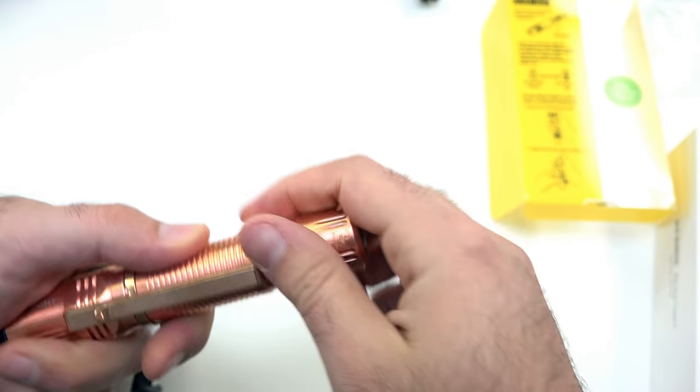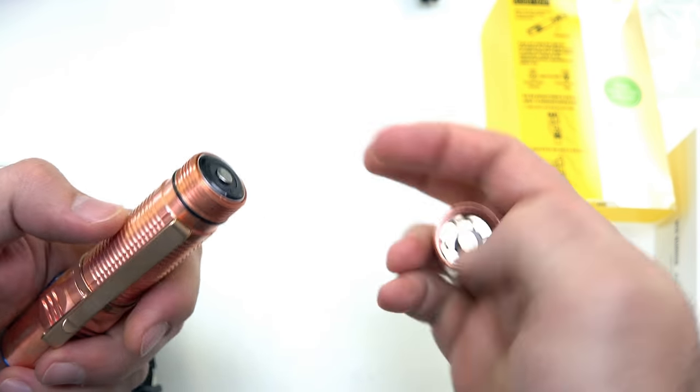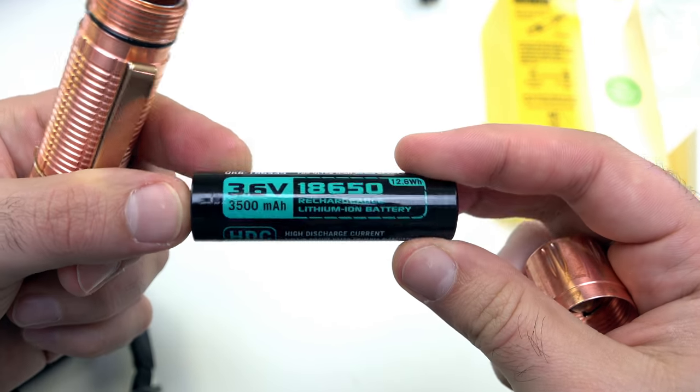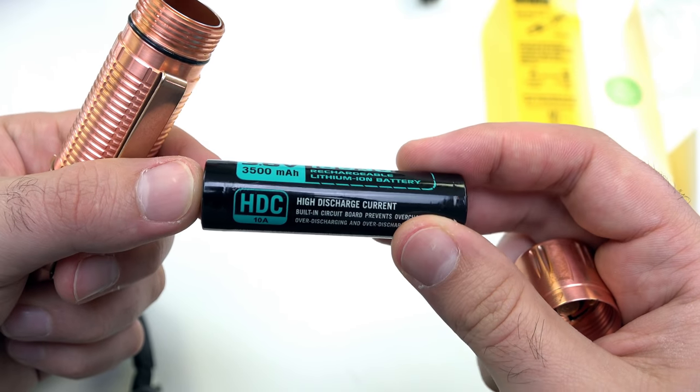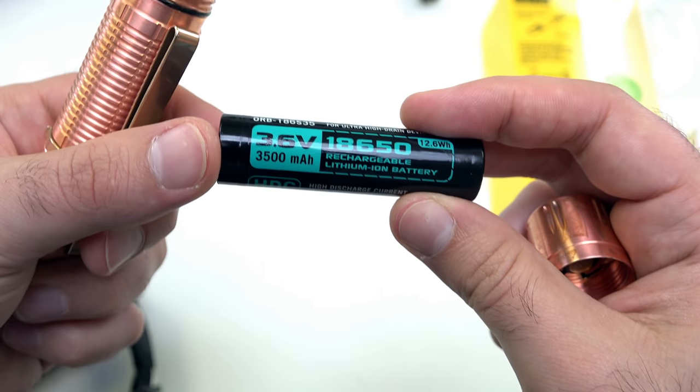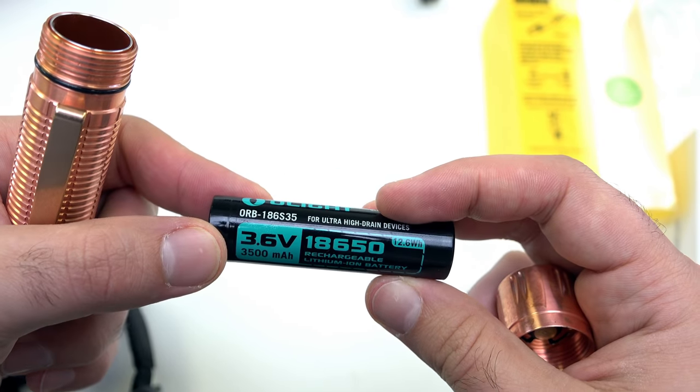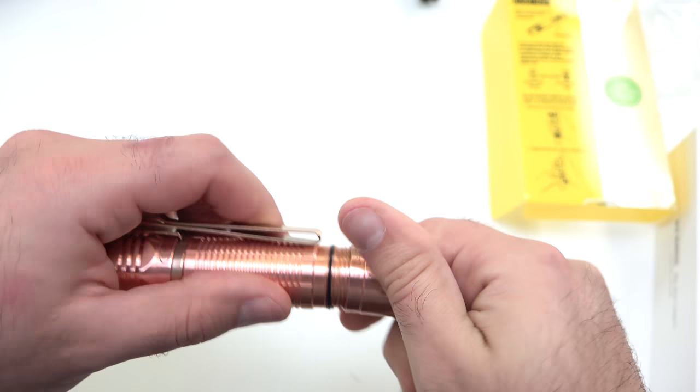First thing that we want to do is pull this out here so that the light will work properly. It comes with the 3500 milliamp HDC high discharge battery here, which is great. This is actually my favorite battery that we make. Let's pop this battery back in, you want the positive side facing the tail cap, and we'll screw this down and we're fully operational.